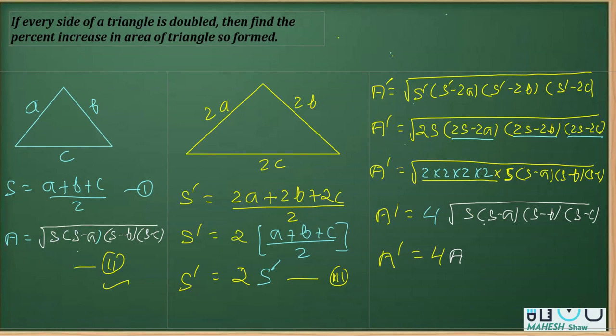Now, we got the ratio here and we have to find the percentage increase. So clearly, the new area is 4A and the original area is A. The new area is 4 times A. So I can say that there is an increase and how much increase in area? Increase is equal to 4A minus A. That is equal to 3A.